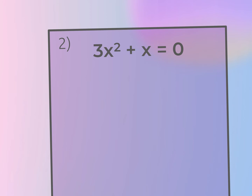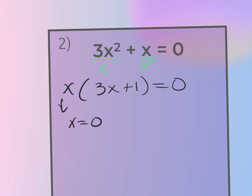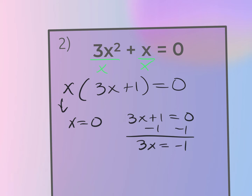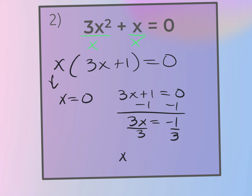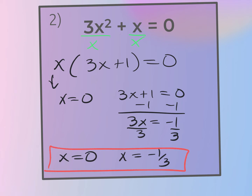Now I set each one of these factors, including the GCF, equal to zero. The GCF set equal to zero gives x = 0. Then I set (3x + 1) = 0, subtract one and divide by three, giving x = −1/3. So my two solutions are x = −1/3 and x = 0. If I were graphing these, these would also be my x-intercepts, but that's coming later.